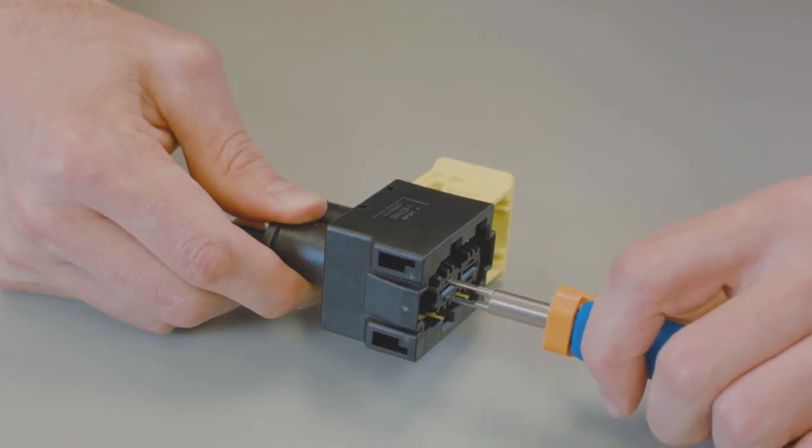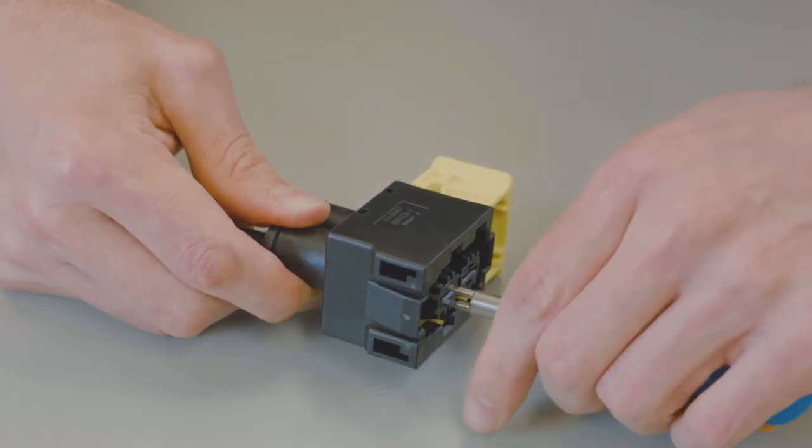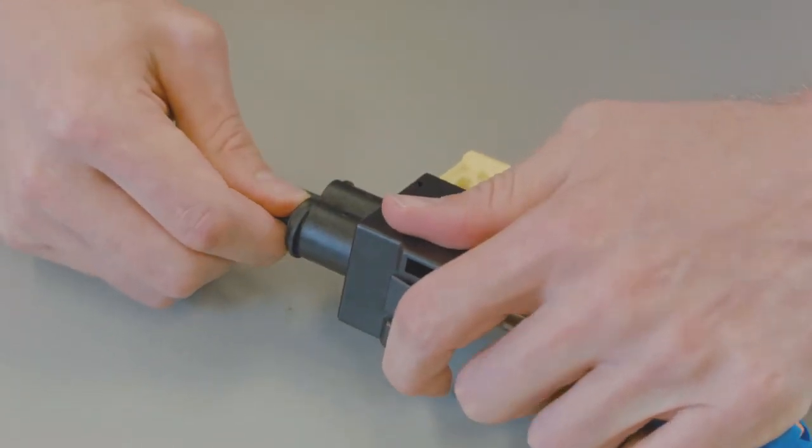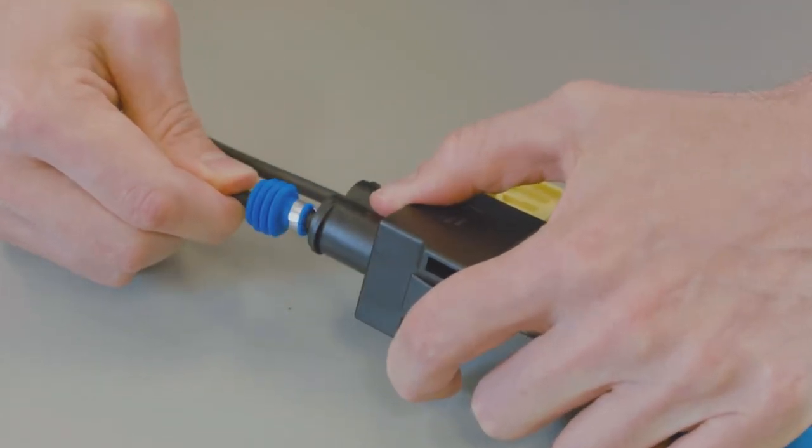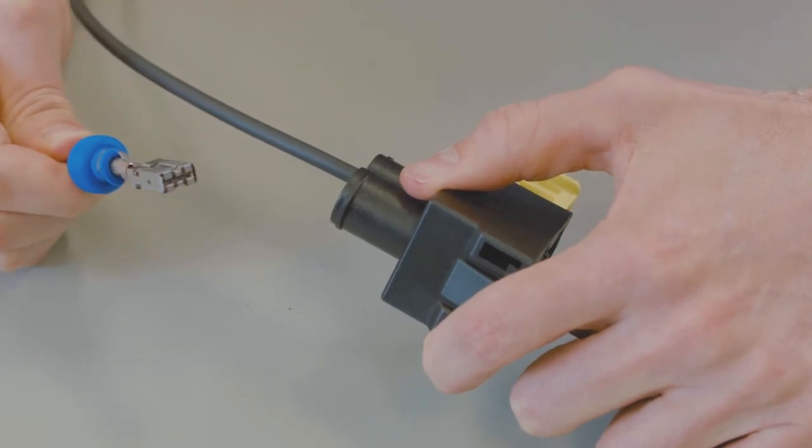Using the correct removal tool, insert the tool into the contact release points. While holding the tool in place, gently pull on the wire until the contact is removed. Repeat this process until all of the contacts have been removed.